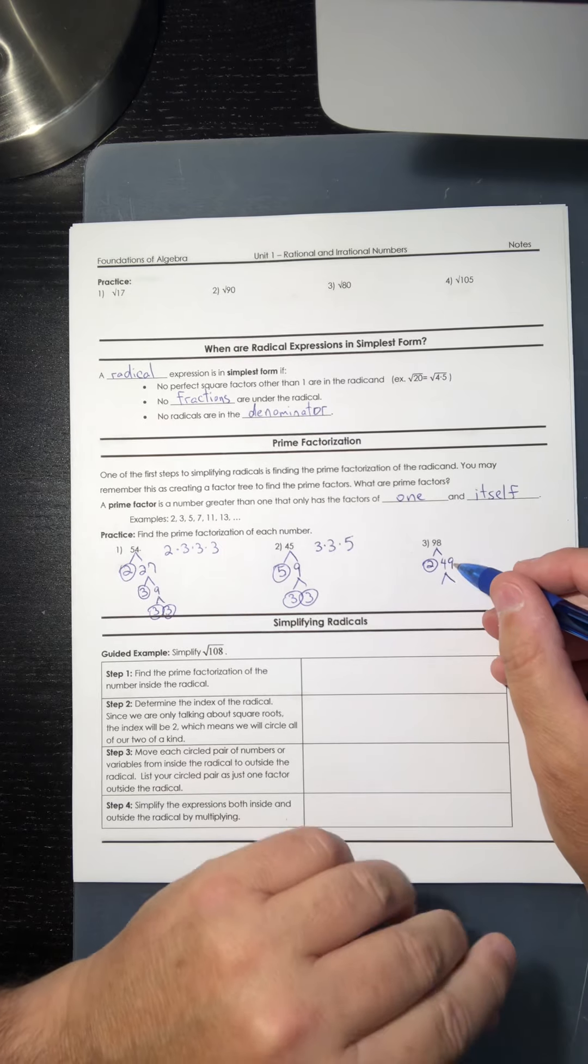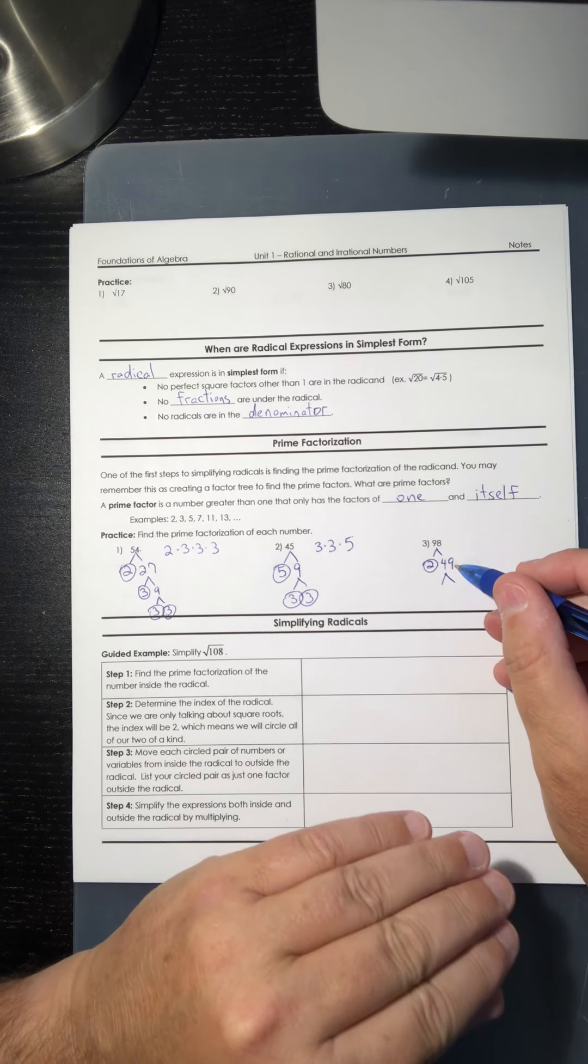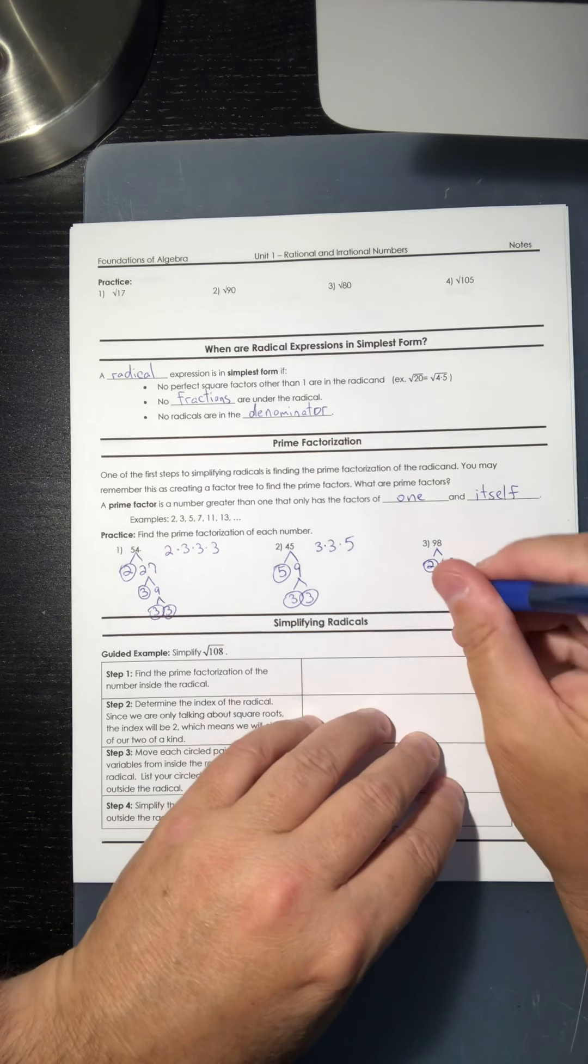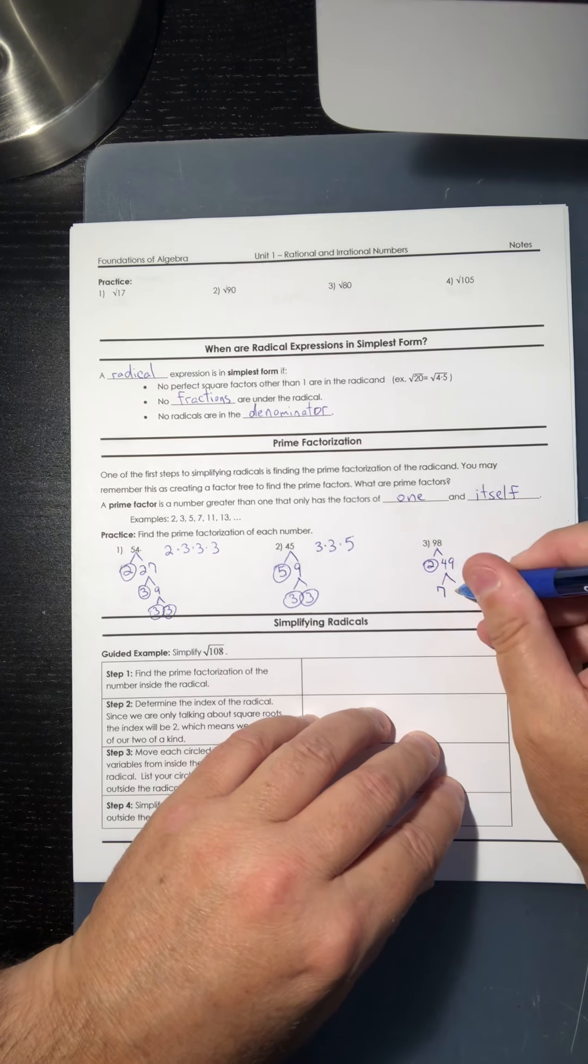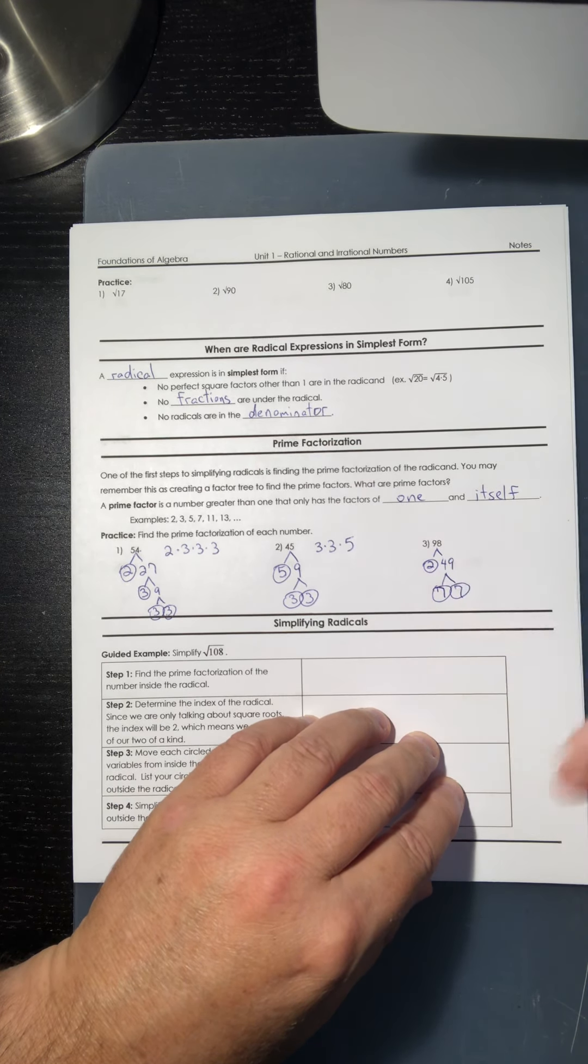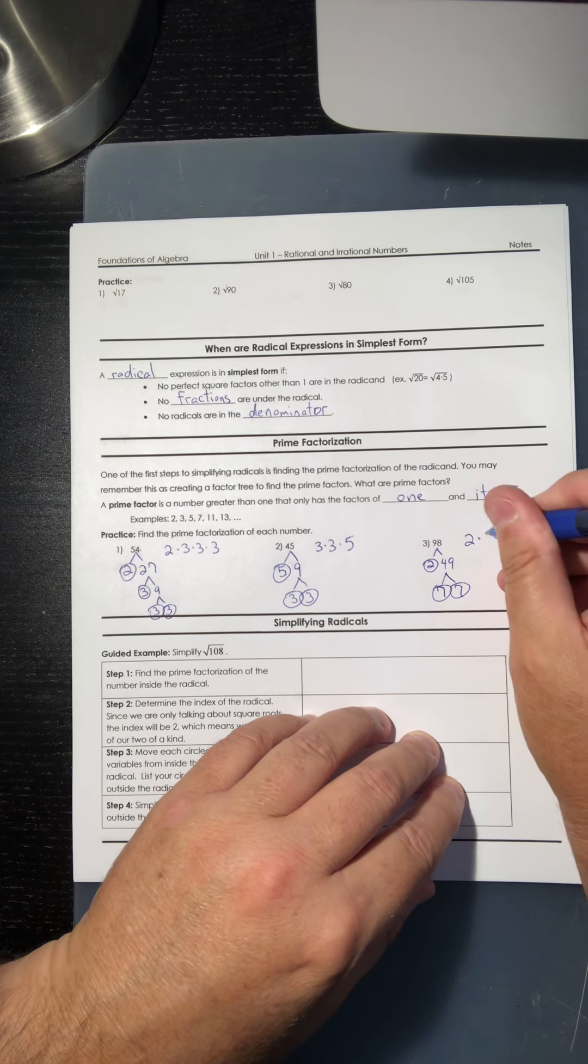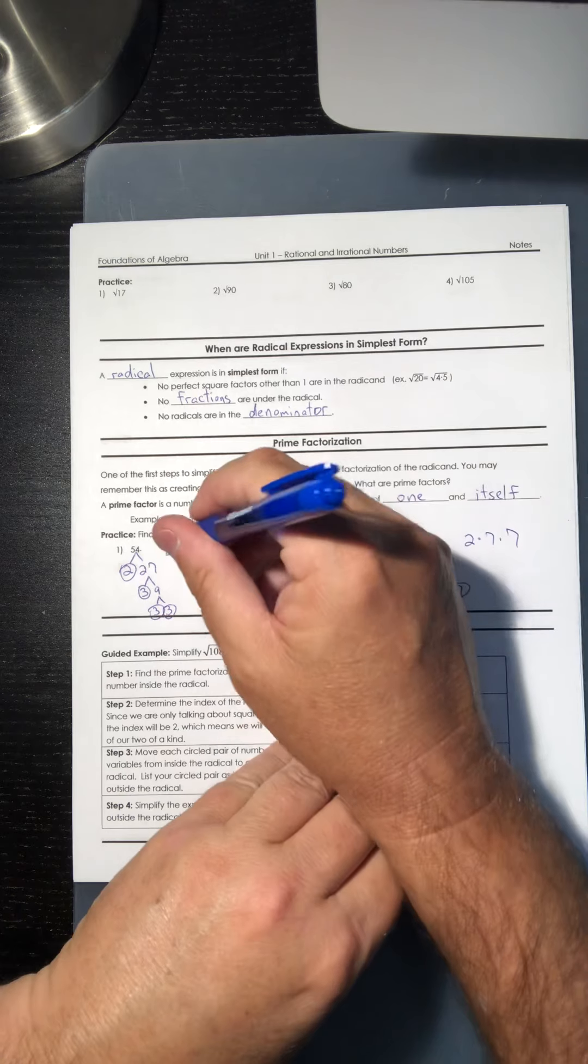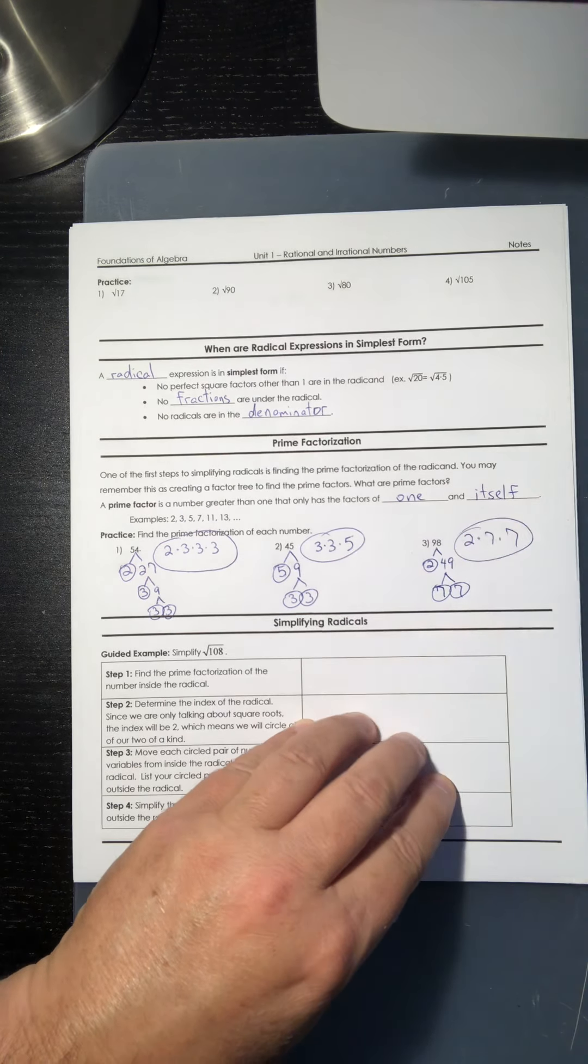So then try 49 divided by 4. It doesn't give you a whole number, so that doesn't work. And keep trying. And when you get to the number 7, 49 divided by 7 is going to give you a whole number, and the answer is going to be 7. So those are all prime numbers, so now we're going to list that as 2 times 7 times 7. So here are my prime factorizations of those three numbers.